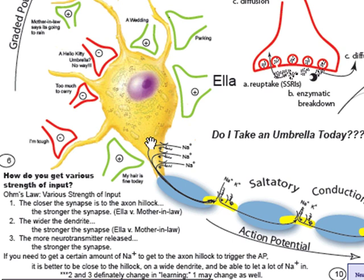If you're way out here on Mother-in-Law, really, no matter how much sodium you dump in there, it's going to get spread out. And so it means it's going to be hard for the synapse to get 1,000 sodiums down here. The third thing is simply how much neurotransmitter is released.